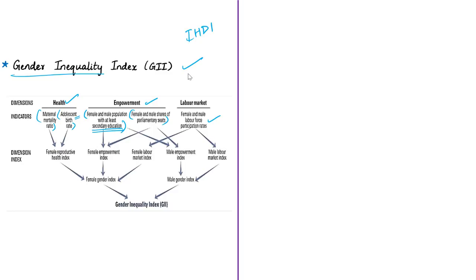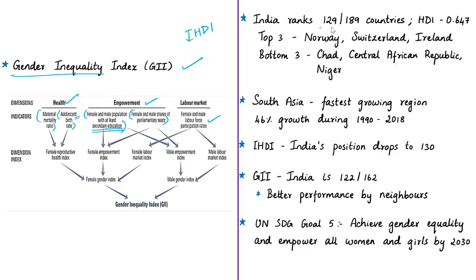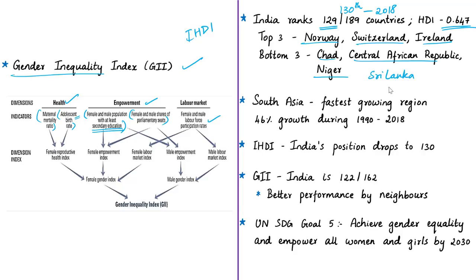In the Human Development Index 2019, India is ranked 129th out of 189 countries, improving from 130th in 2018, with a score of 0.647 in the medium human development category. Top performers are Norway (0.954), Switzerland, and Ireland. The lowest performers are Chad, Central African Republic, and Niger. Among India's neighbors, Sri Lanka ranks 71st and China ranks 85th.